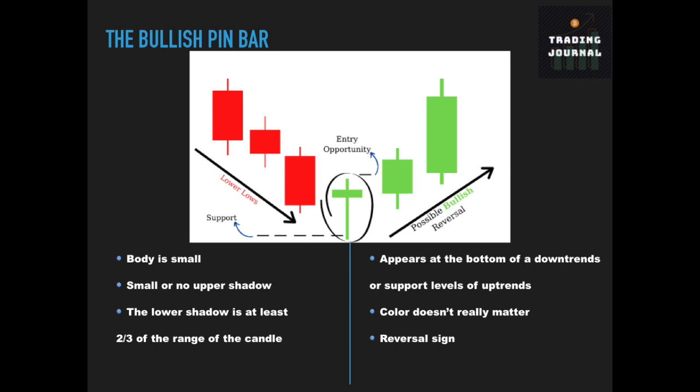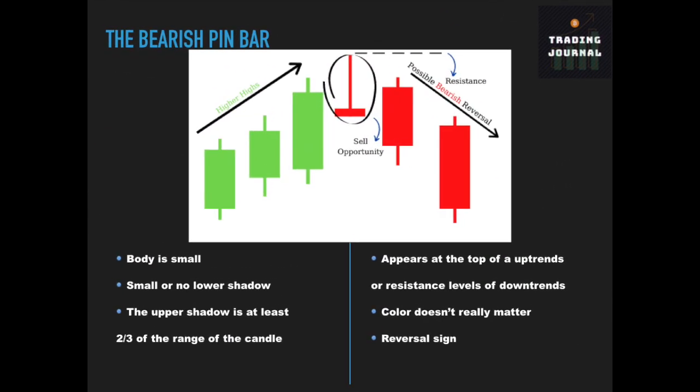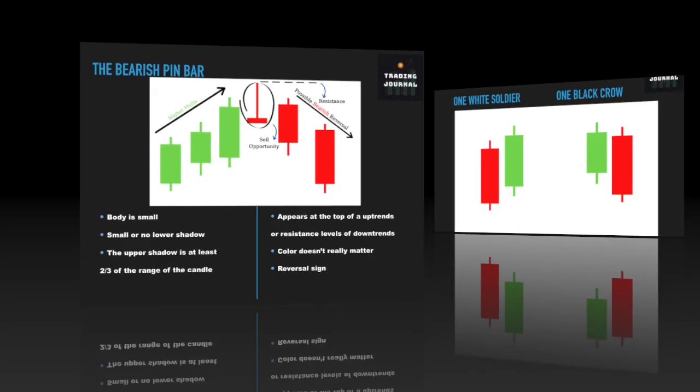There is a high probability that the price will go up. The bearish pin bar is the opposite of the bullish pin bar. It appears at the resistance levels of downtrends or at the top of uptrends. It can be red or green. It has a long upper shadow and a small or no lower shadow. It indicates that bears are getting stronger and there is a high probability that the price will go down.